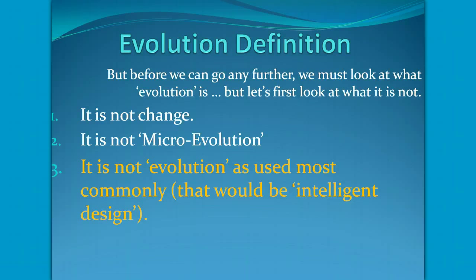Evolution normally is used in referring to something that improves by intelligence — that would be intelligent design. For instance, evolution of the airplane, or evolution of the computer, or evolution of the automobile.